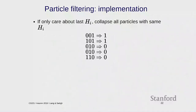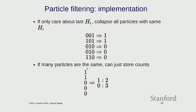In practice, if you only care about the current time step and not the full trajectory, you can collapse particles with the same H_i value and just track counts. This is what you'd do in your assignment. Particle filtering is more general, but most of the time you're only interested in the last time step.